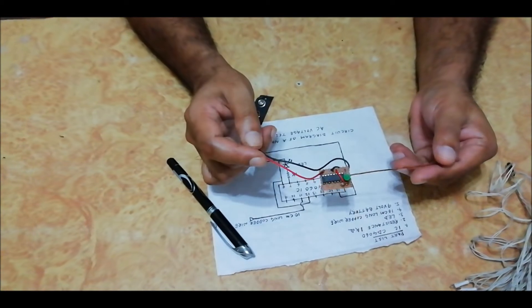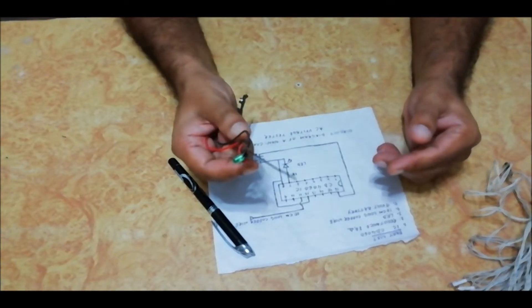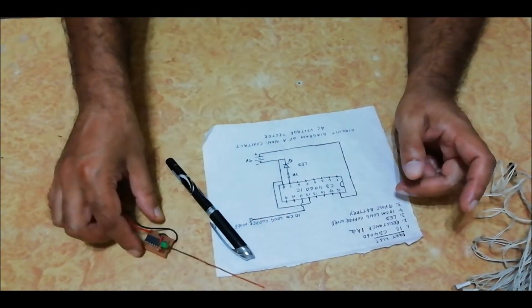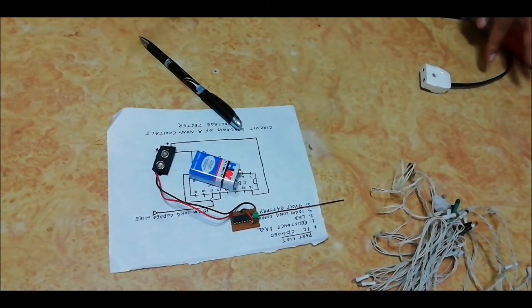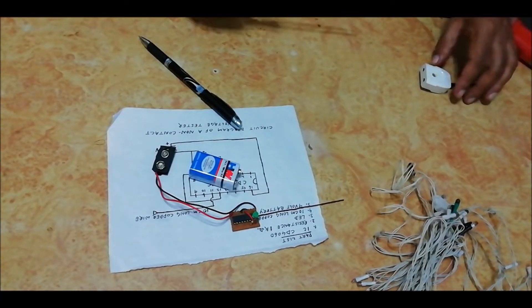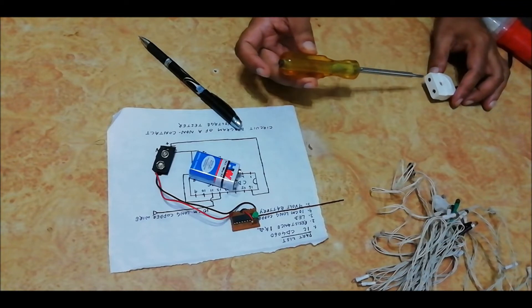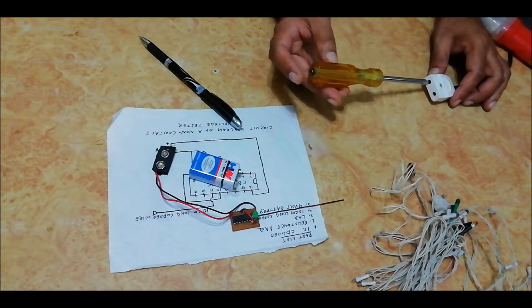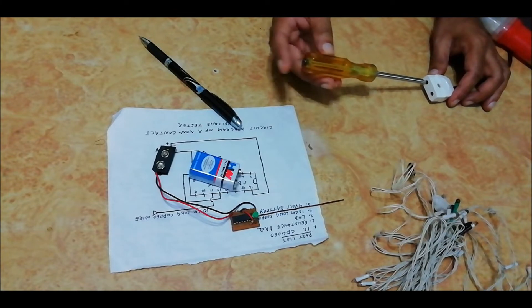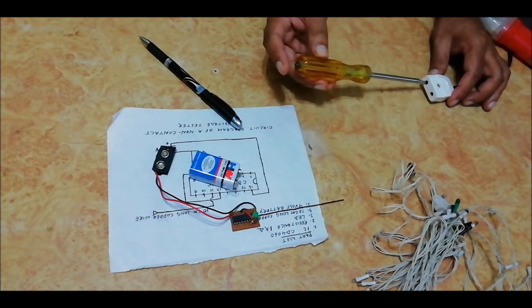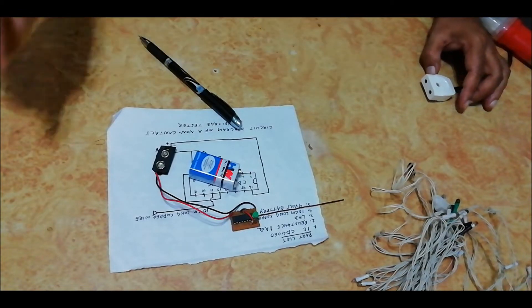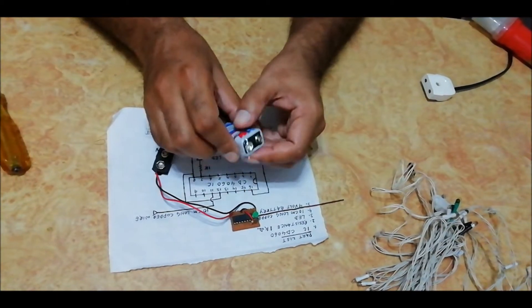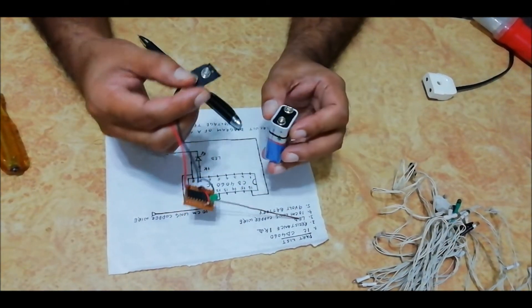You can see this is a live wire. You can check the voltage by using this traditional tester. Now connect the battery with this non-contact tester.